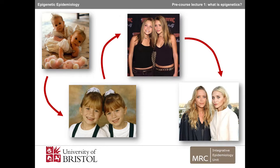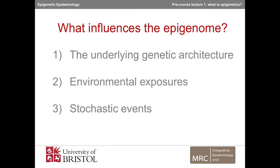This happens because, in addition to being influenced by the underlying genetic architecture — the genome — the epigenome can also be influenced by environmental exposures. These environmental exposures can include exposure to diseases such as type 2 diabetes, obesity, infection, and cancer. Epigenetic changes can also occur randomly over time.